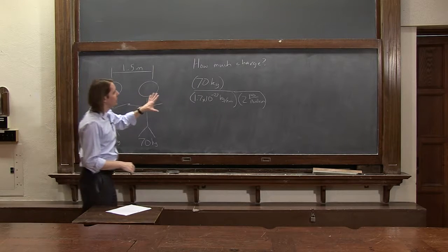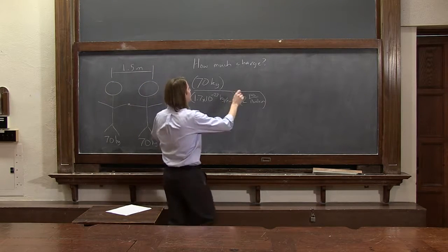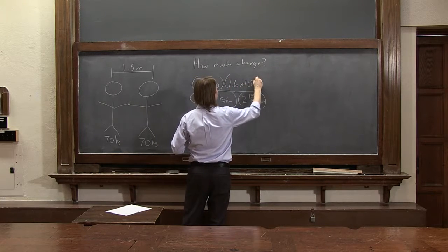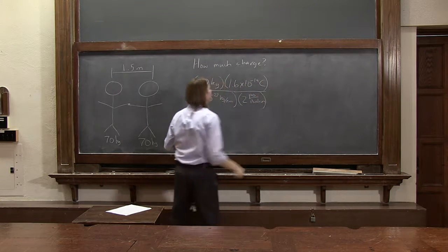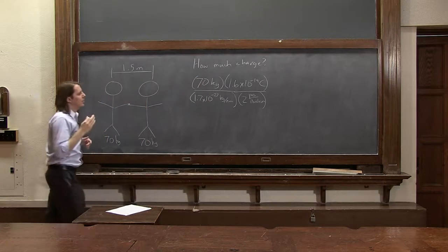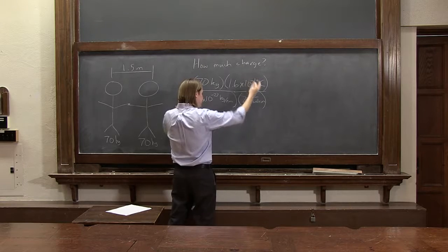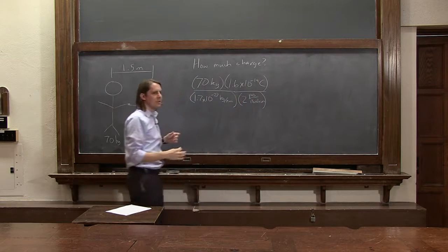So there's your number of nucleons. And now each one will have a charge of 1.6 times 10 to the minus 19 coulombs. So if you multiplied all that out, you'd get coulombs. This would be the charge, the positive charge in a person.